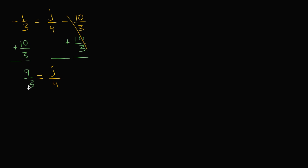Now you might recognize 9/3 — that's the same thing as 9 divided by 3, which is just 3. So that simplifies things a bit. Let me rewrite it clearly: 3 is equal to j/4. Now, to solve for j, I could multiply both sides by 4. Because if I divide something by 4 and then multiply by 4, I'm just going to be left with that something. So multiplying both sides by 4 will leave just j on the right hand side.